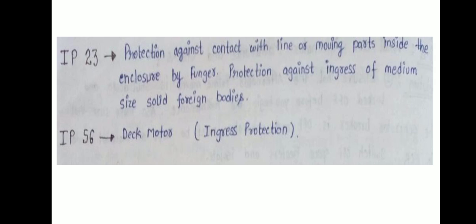If it is written IP23, it means protection against contact with live or moving parts inside the enclosure by finger, and protection against ingress of medium-size solid foreign particles. IP23 means it will provide protection against ingress of medium-size solid foreign particles. And IP56 means deck motor, where ingress protection will be there. These are some of the information that we can obtain from the nameplate of an alternator and transformer.